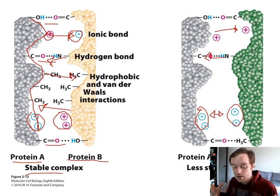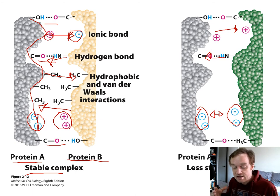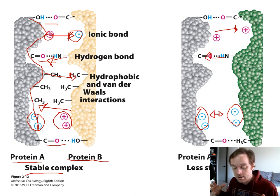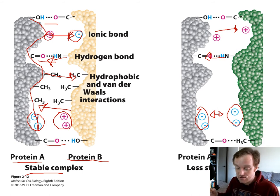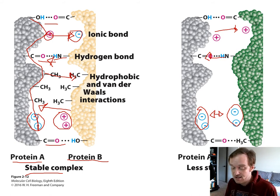This molecular complementarity is very important for making one protein specific to another or to a specific ligand. A protein wants to ensure that only its specific binding partner comes to bind, not random stranger proteins taking up its active site binding domain if it won't lead to any beneficial chemical reaction.